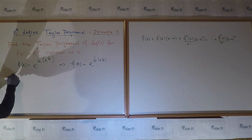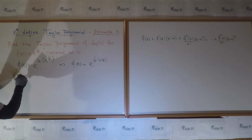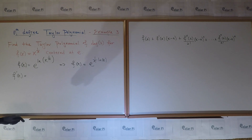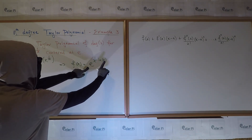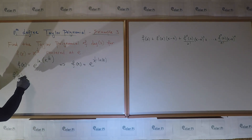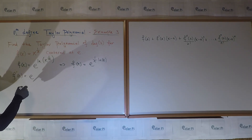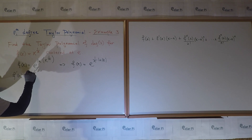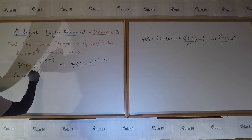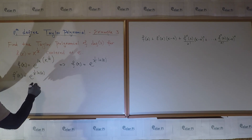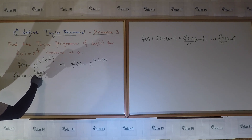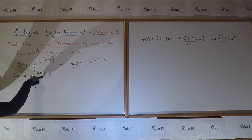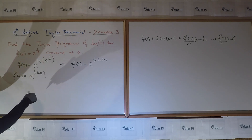From here, we see that f prime of x is going to equal — well, the derivative of e to anything is e to anything times the derivative of anything by chain rule. So f prime is going to be e to anything, where anything is 1 over x times ln of x, times the derivative of that. The derivative of this is going to require the product rule, because it's a product between 1 over x and ln of x.